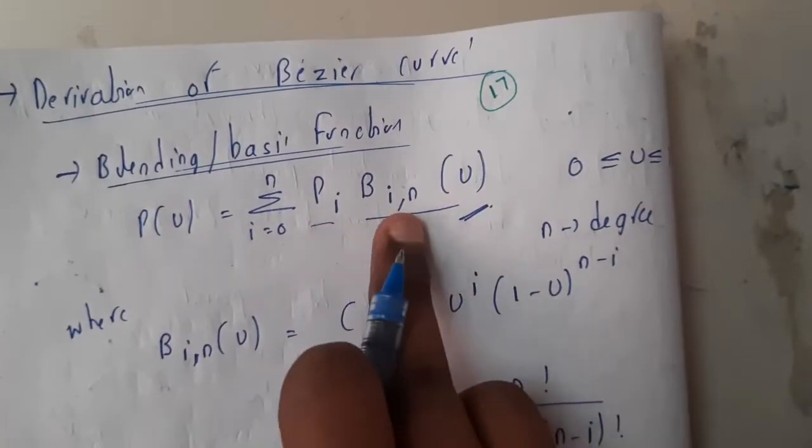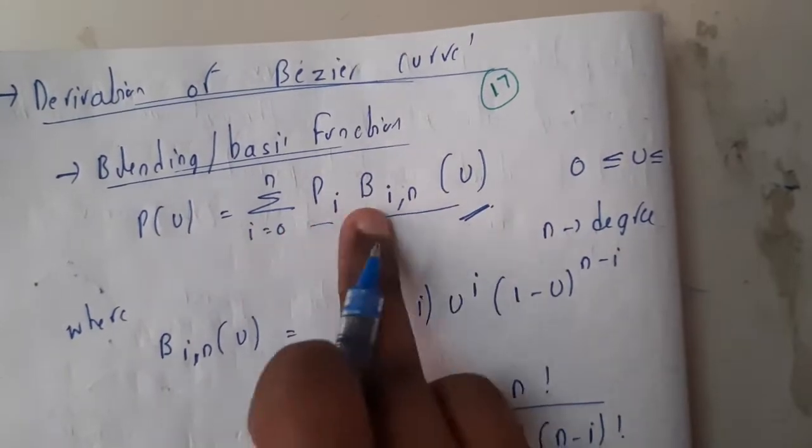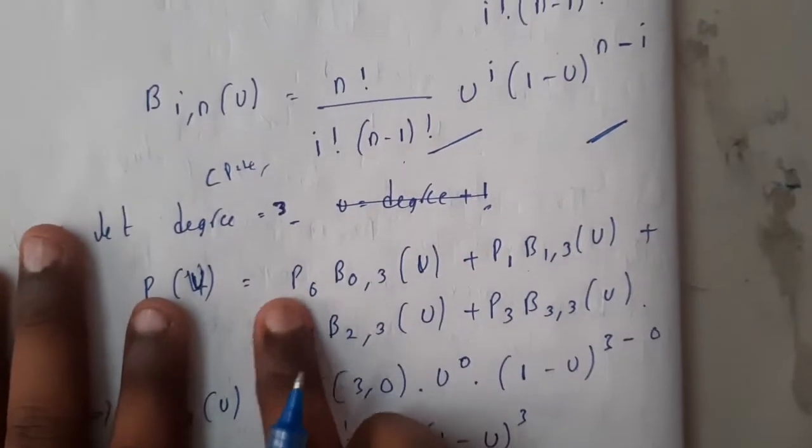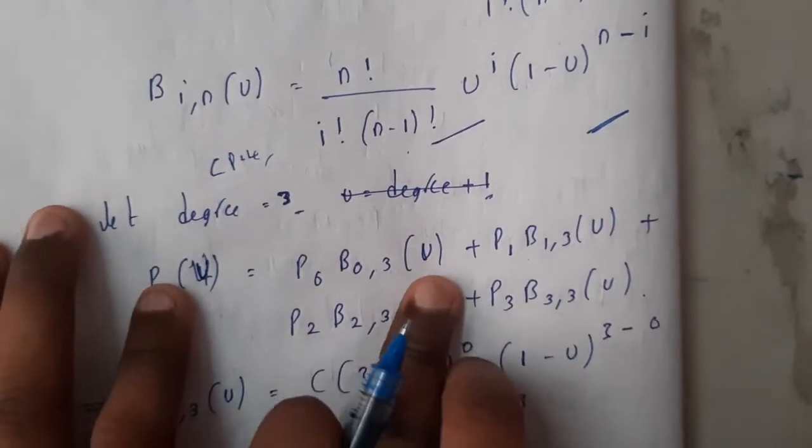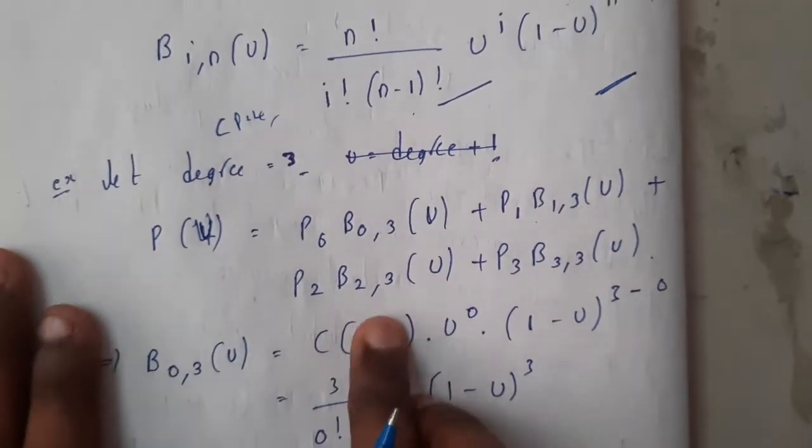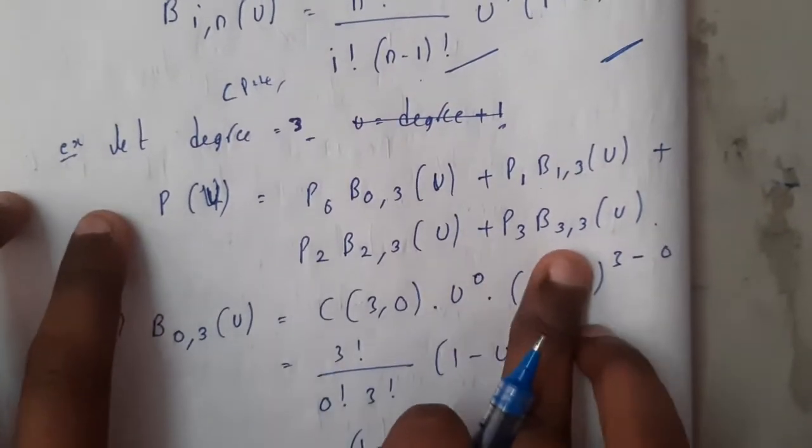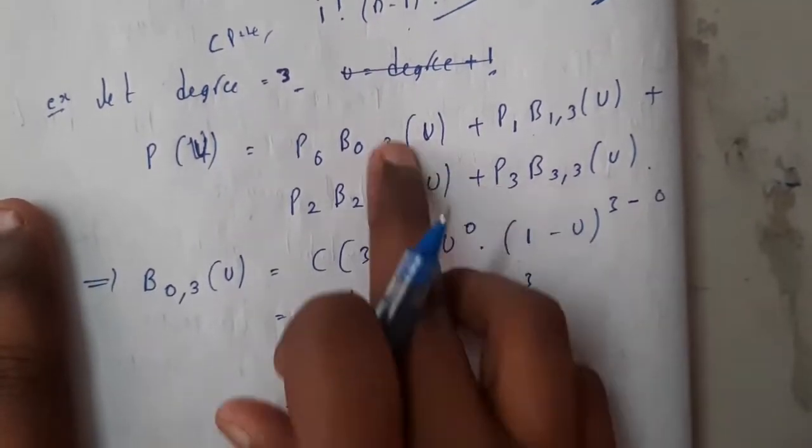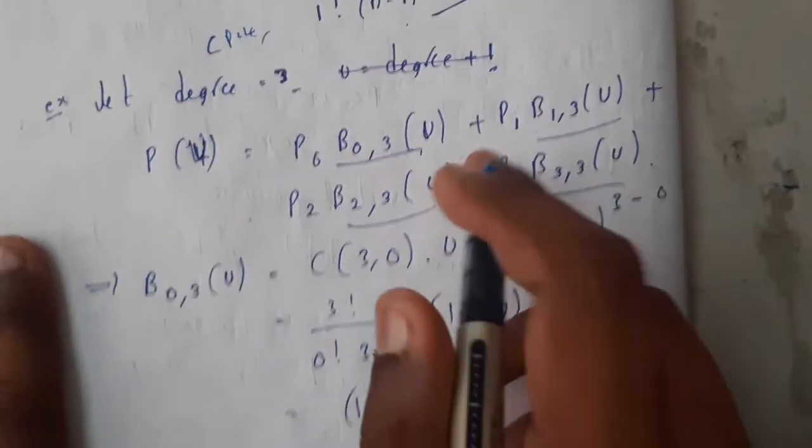In this I am substituting i equal to 0. So i is nothing but 0, 1, 2, 3 for 4 points with degree 3. So we got P_0 B_{0,3}(u) plus P_1 B_{1,3}(u) plus P_2 B_{2,3}(u) plus P_3 B_{3,3}(u).